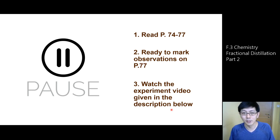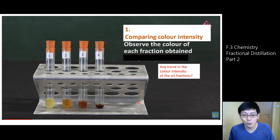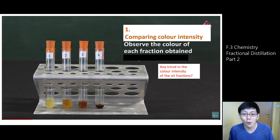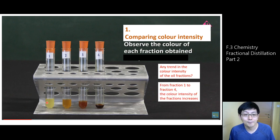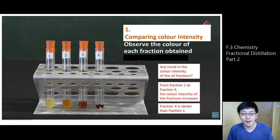What are the differences in properties of these oil fractions? Number one: color intensity. This one is very straightforward — you can record the observation by referring to this photograph. These are fractions number 1, 2, 3, and 4, each containing different types of hydrocarbons. You can immediately tell the trend: from fraction 1 to fraction 4, the color intensity increases from pale yellow to orange, brown, or even black. Fraction 4 is clearly darker than fraction 1 — there is a trend of increasing color intensity from fraction 1 to 4.